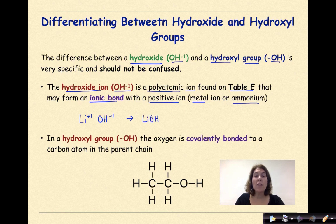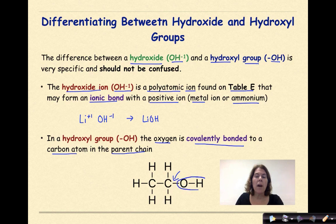In a hydroxyl group (-OH), the oxygen is covalently bonded to a carbon atom in the parent chain. This bond right here is a covalent bond where the carbon and the oxygen are sharing a pair of electrons. There's not a big enough difference in electronegativity values between the carbon and the oxygen for the OH to be completely released and become an ion. Therefore, it is an alcohol group. What you're looking for is this OH bonded to a carbon, and you know that is an alcohol group.